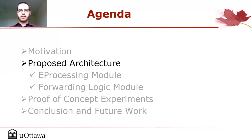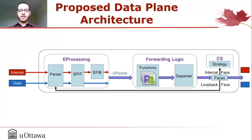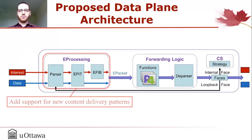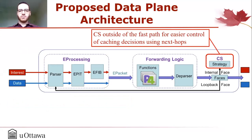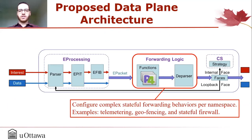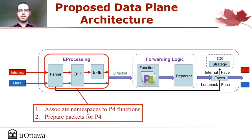The data plane of eNDN has two main modules: eProcessing and forwarding logic. The eProcessing module contains the NDN forwarding pipeline with modifications to support new content delivery patterns. Another modification is putting the content store outside of the fast path, accessible through an internal interface to allow easier control of caching decisions using next-hops. The forwarding logic module contains several P4 functions that implement complex stateful forwarding behaviors per namespace, like telemetering, geofencing, and stateful firewall. Another goal of the eProcessing module is to associate namespaces to P4 functions and prepare packets for P4.